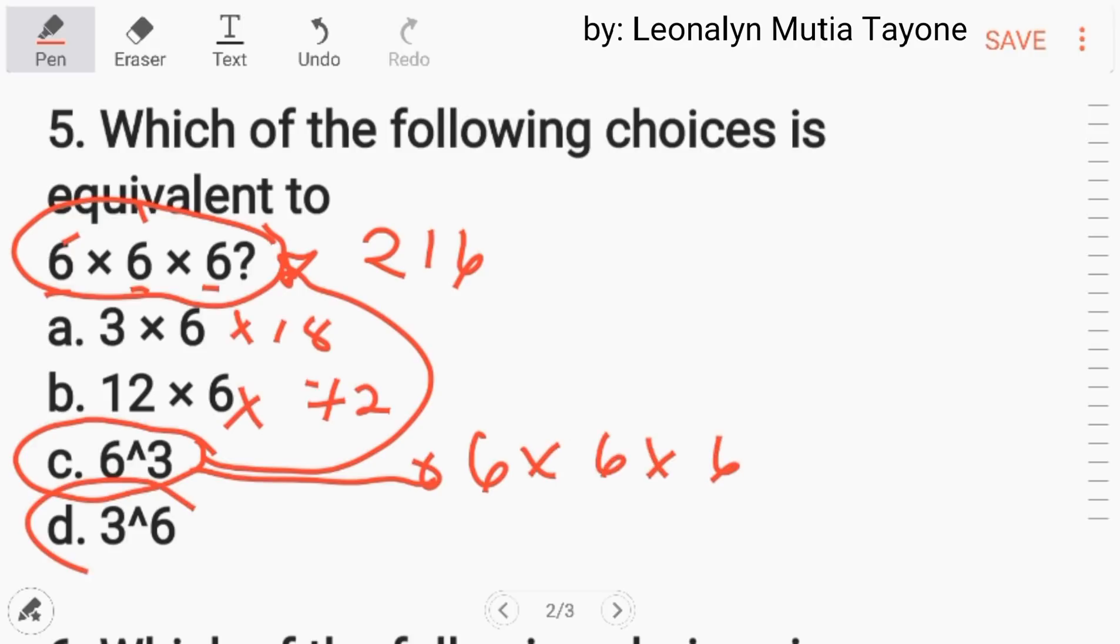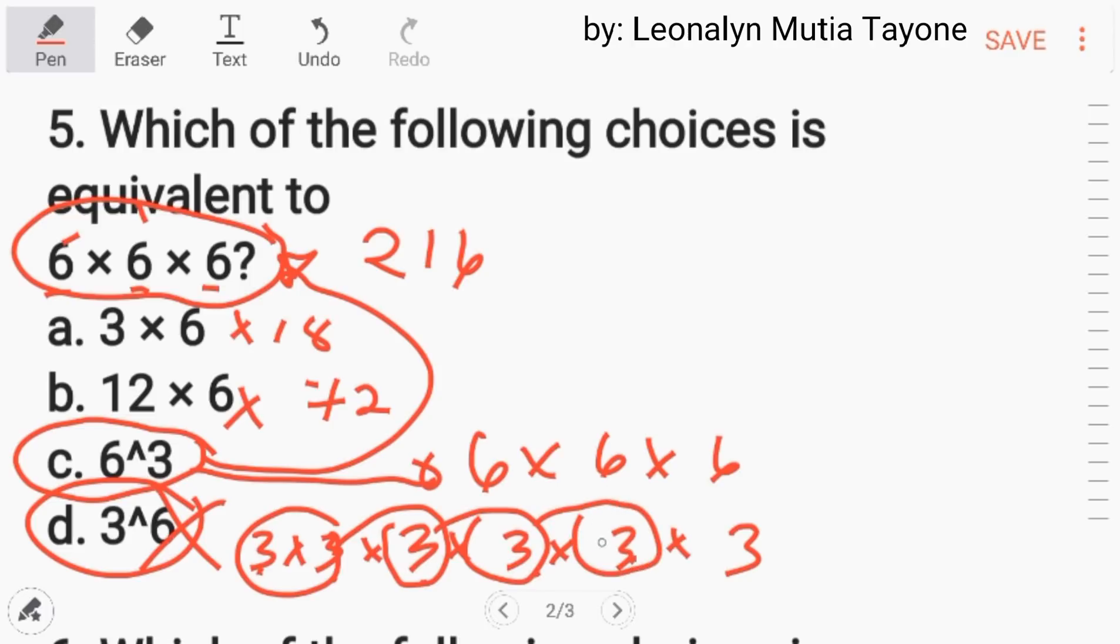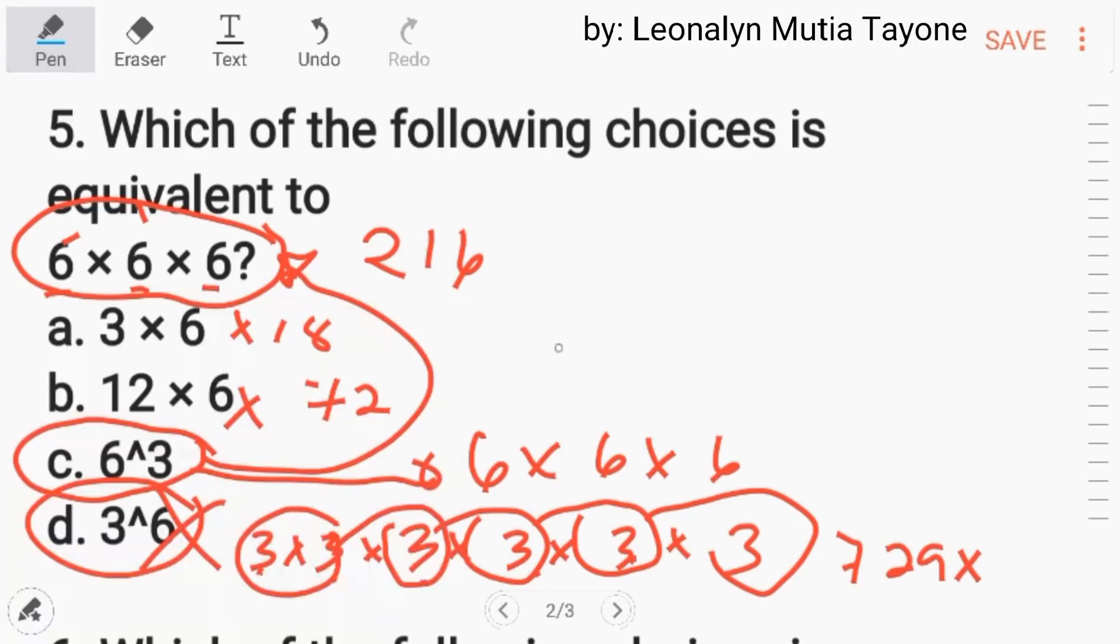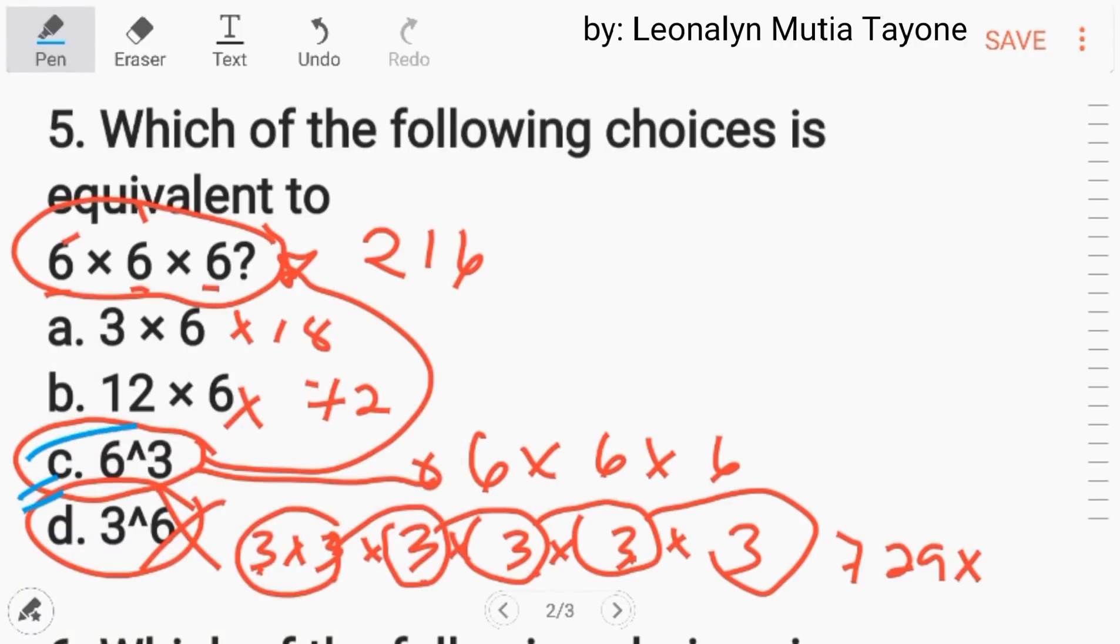While ang letter D, mali yan. Kasi 3 times 3, bali 6 na 3, baliktad. 3 times 3 is 9, times 3 that is 27, times 3 that is 81, times 3 is 243, tapos times 3 pa, that is 729. So mali yan. The answer is letter C.